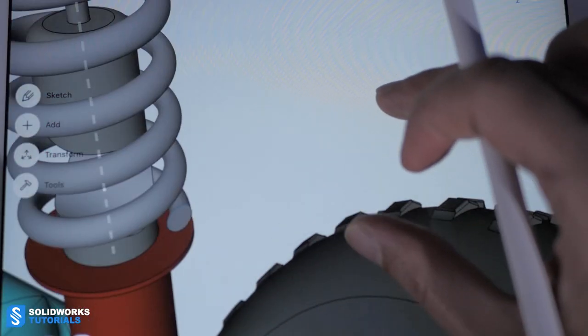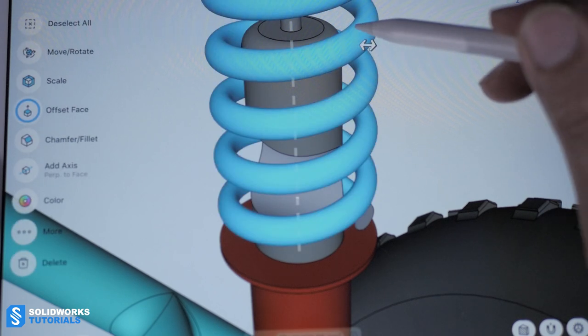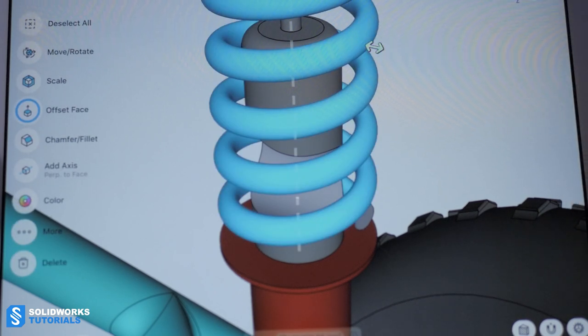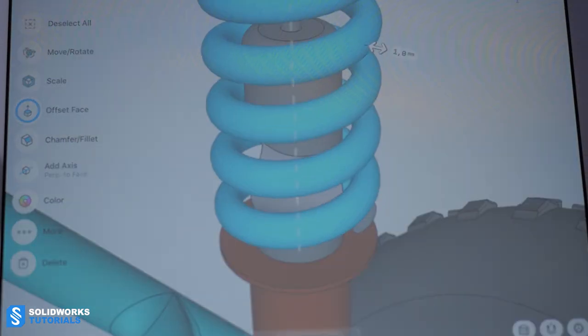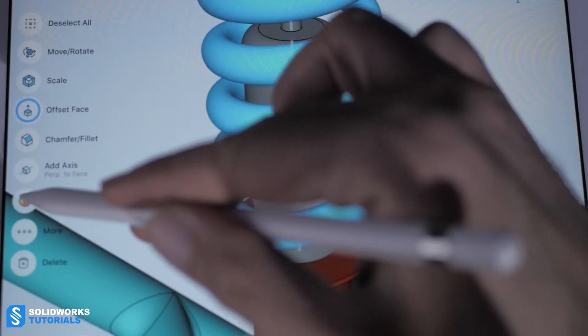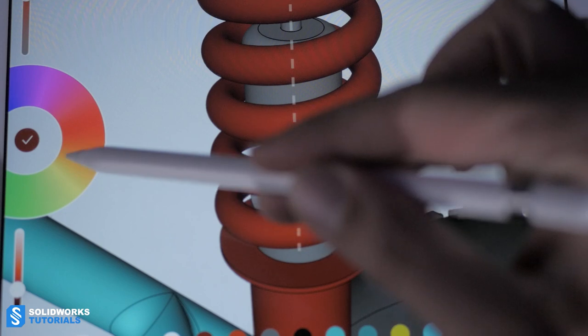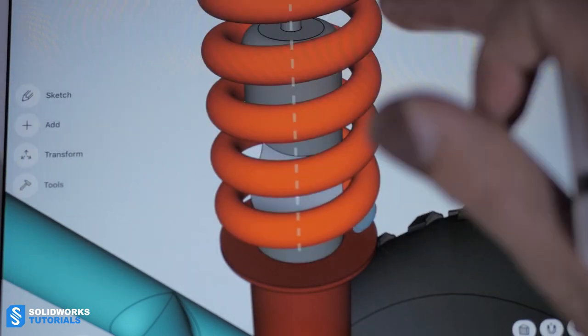And look. It's so easy to change this. And if I think it's too thin, I'm just making it a little bit thicker. Boom. Done. Change the color. Go red. Or orange. Whatever.